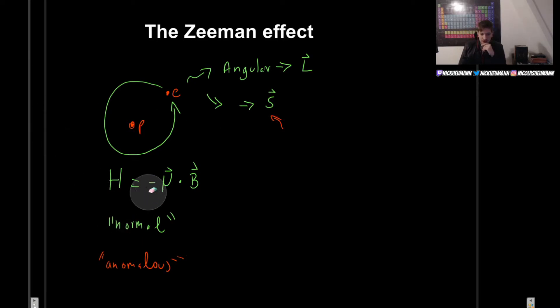And the way to do that is to use this Hamiltonian. And of course, we will be dealing with the anomalous Zeeman effect. However, we will simply call it the Zeeman effect.